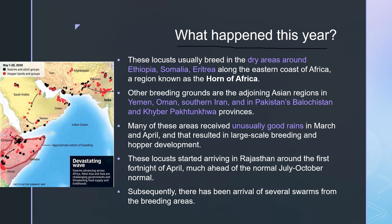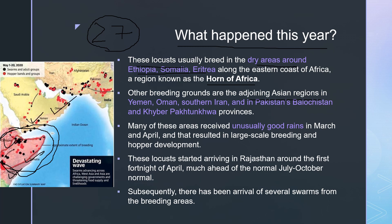What happened differently this year such that we are facing such a heavy locust attack? Scientists are claiming it is the strongest attack in the past 27 years. These locusts usually breed in dry areas around Ethiopia, Somalia, and Eritrea — the Horn of Africa region. Other breeding grounds are adjoining Asian parts: Yemen, Oman, southern Iran, Pakistan, and Khyber Pakhtunkhwa provinces — all desert and dry conditions favorable for breeding.